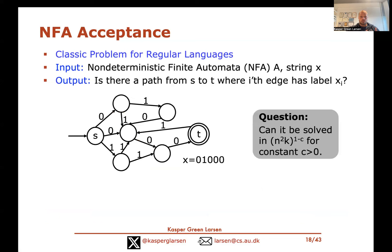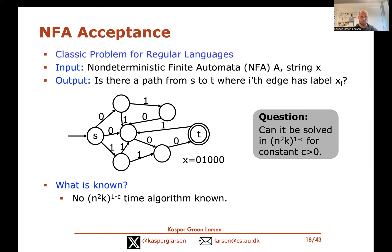A natural question is: can we solve NFA acceptance faster? In particular, can we shave off a polynomial factor from this running time, doing it in O(n² · k^{1−c}) for some constant c > 0? There's no faster algorithm known — maybe you can shave polylog factors, but definitely not a polynomial factor.